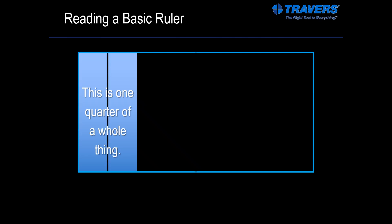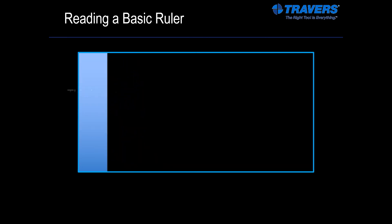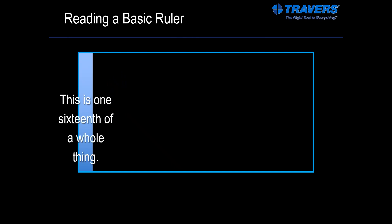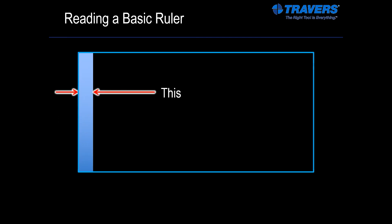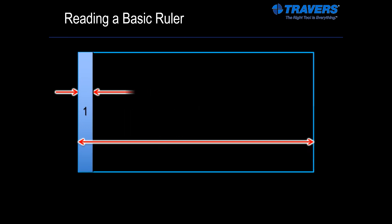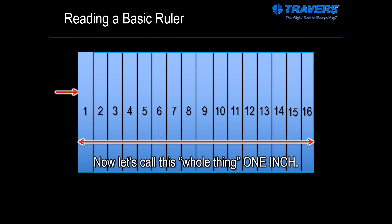And we're going to do it again — split that down the middle again and take it away. Now we have one eighth of a whole thing. And one more time, I'm going to split it in half. And what we have left is one sixteenth of a whole thing. So that piece is one sixteenth of that whole thing. If we had 16 of them, the 16 pieces would make that whole thing.